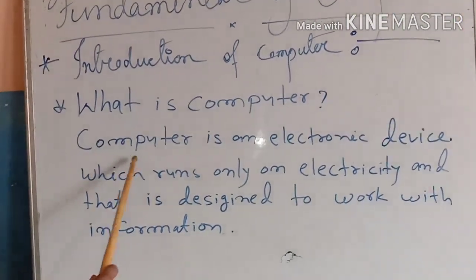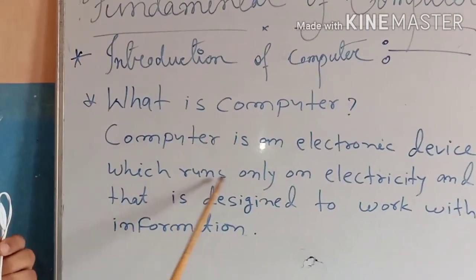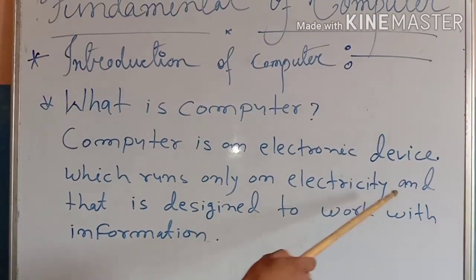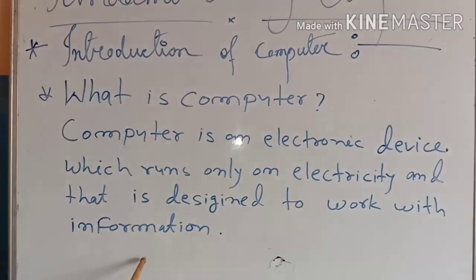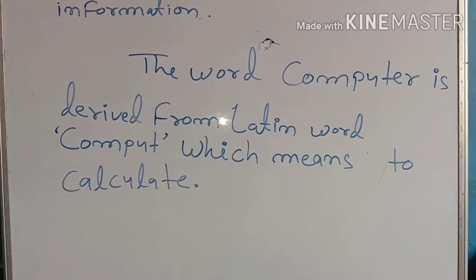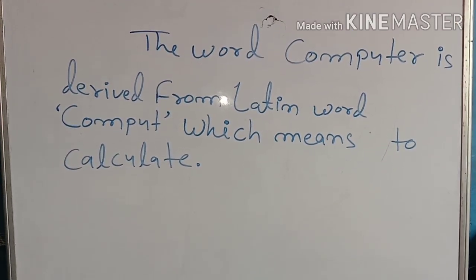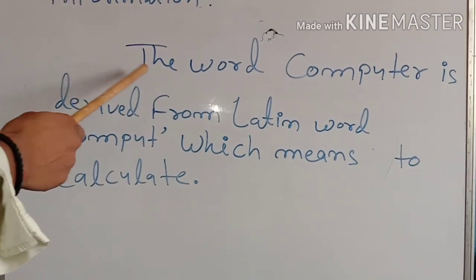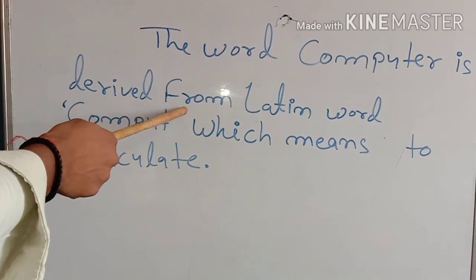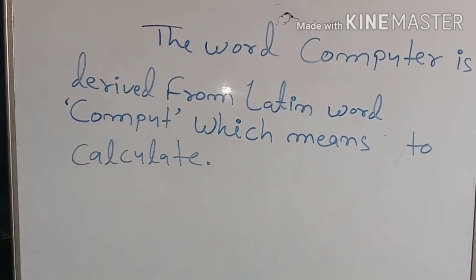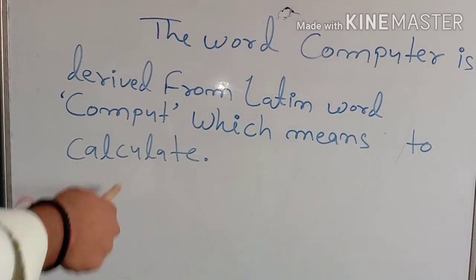To repeat: a computer is an electronic device which runs only on electricity and is designed to work with information. Now, where is the word 'computer' derived from? The word computer is derived from the Latin word 'compute,' which means to calculate.